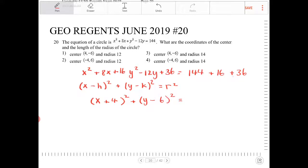144 plus 16 plus 36. What will that turn into? That will turn into... no, it'll turn into 196. And 196, as it turns out, is 14 squared.